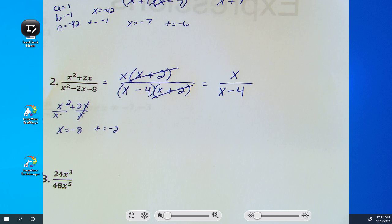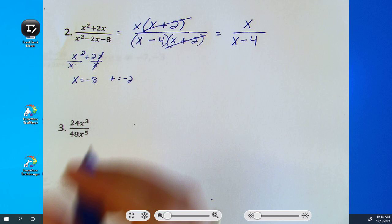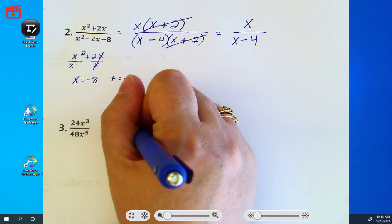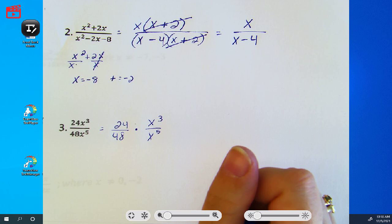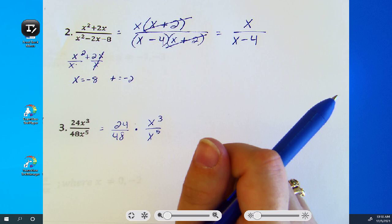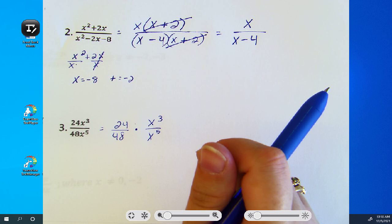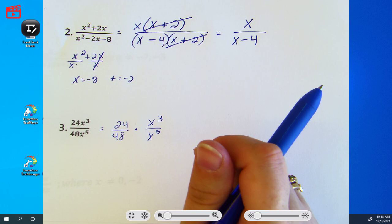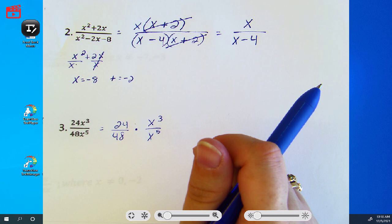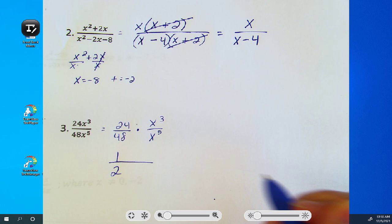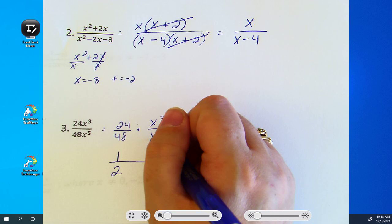And number 3, like I said, you did this back when we did exponents. Remember when we did exponents, we treated the numbers separately from the variables? And I told you just to plug that in your calculator and hit equals. So go for it. Plug that in your calculator and hit equals. What'd y'all get? 1 half. Now, what do you do with the exponents? Subtract them.